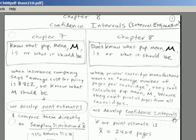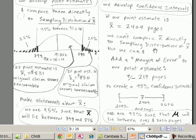That's where confidence intervals come in. We're still going to use point estimates. We'll go out and take a sample. We'll get 2,409 pages. That's the average from our sample. But we can't compare it directly to the sampling distribution of X bar. We're going to add a margin of error to our point estimate. We'll get a margin of error of 217 pages. We'll create a 95% confidence interval that says, we're 95% sure that the population mean lies between 2,190 and 2,620.